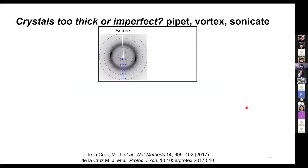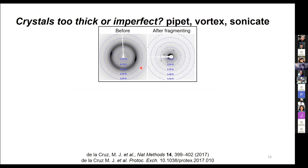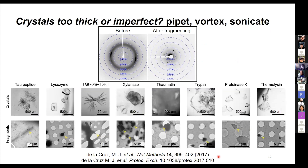If your crystals are too thick or imperfect, you have options. Sometimes we will pipette, vortex, or sonicate to break up crystals into smaller pieces. In this Nature Methods paper, tau peptides were sonicated, and instead of having diffuse diffraction, now there are individual spots. That paper and its corresponding protocol also go through a bunch of crystals which were large, and sonication, pipetting, or vortexing broke them into nice crystals for microED.